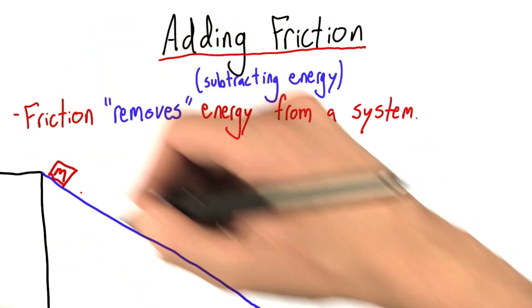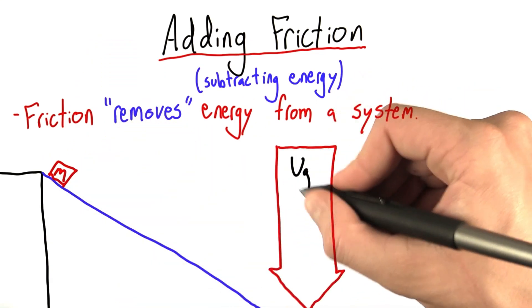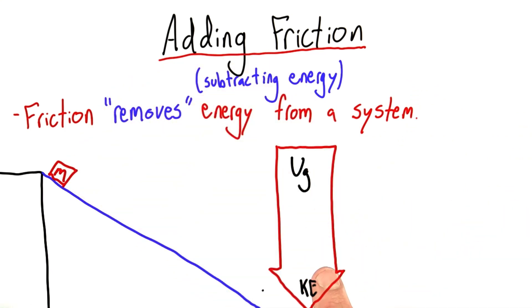Well before when we looked at, let's say, a block sliding down a plane, we visualized this as gravitational potential energy getting converted to kinetic energy as the block moved down. But let's think about that. As this block slides down, it's rubbing against this plane.